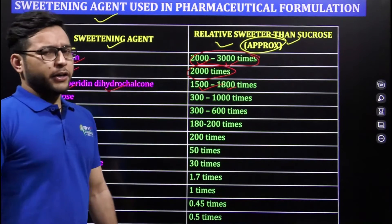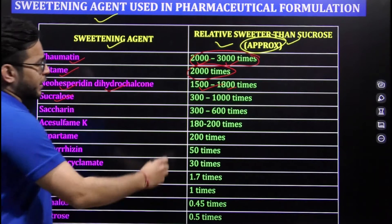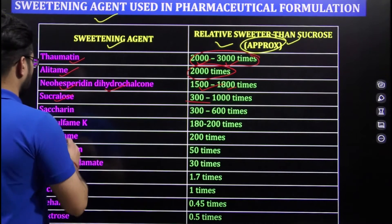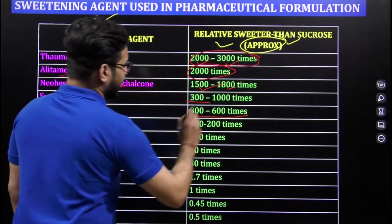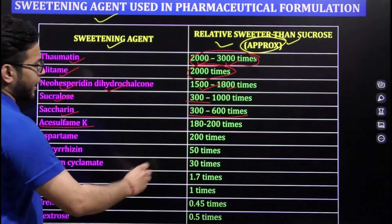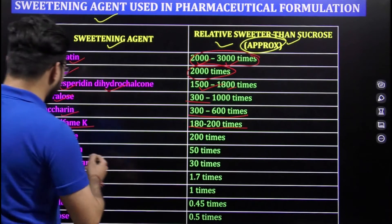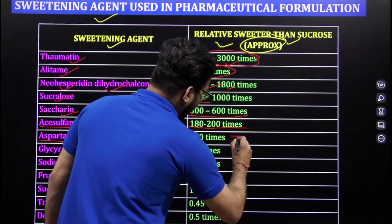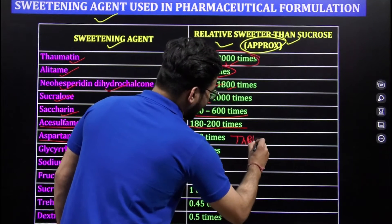Sucralose is 300 to 1000 times sweeter than sucrose. Saccharin is 300 to 600 times sweeter. Acesulfame K is 180 to 200 times sweeter. And aspartame — this question may be asked from you; it is mentioned in the tablet context, so remember it.